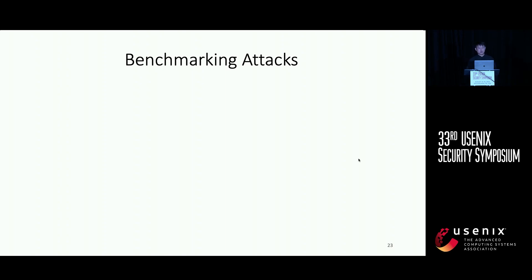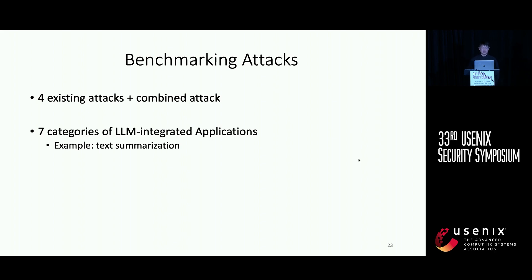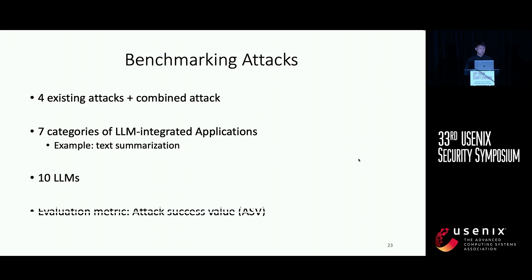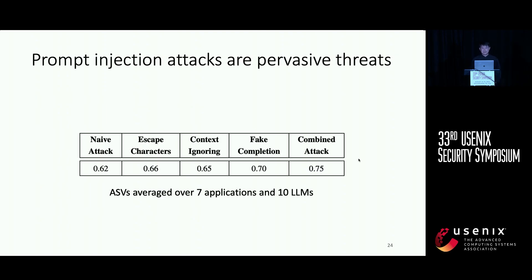In addition to the attack framework, we also benchmark existing prompt injection attacks. This includes four existing prompt injection attacks plus the combined attack proposed by our work, evaluated across seven categories of LLM-integrated applications on 10 different large language models. Examples include text summarization as an application, and models including GPT-4 and models from different vendors. The evaluation metric we use is the attack success value, or ASV — a higher ASV means a more successful attack. Here is a table illustrating the attack success of the five prompt injection attacks across applications and large language models.